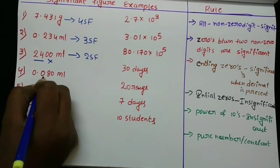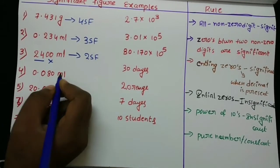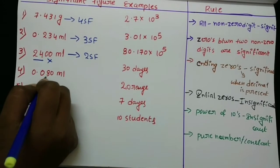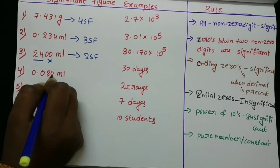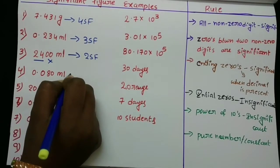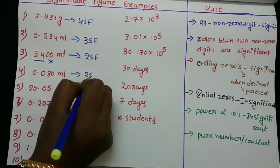0.080 ml — the initial zeros are insignificant, but the ending zero is significant because a decimal is present. So there are two significant figures.